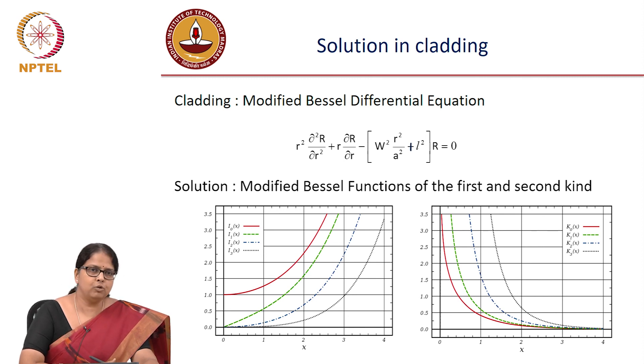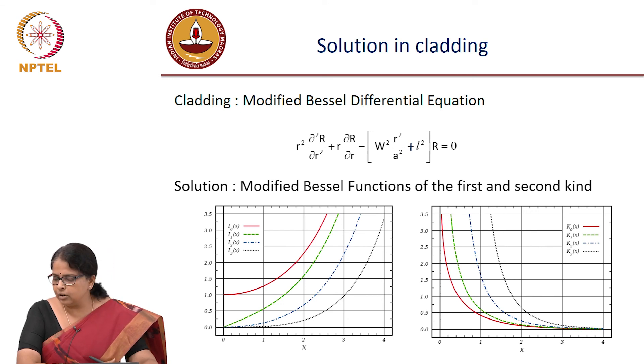So you have again two kinds of functions which are I naught, I1, I2, I3, etc. and K naught, K1, K2, K3, etc. Which of these will you choose for cladding?